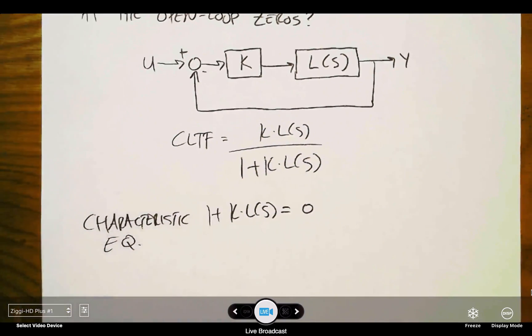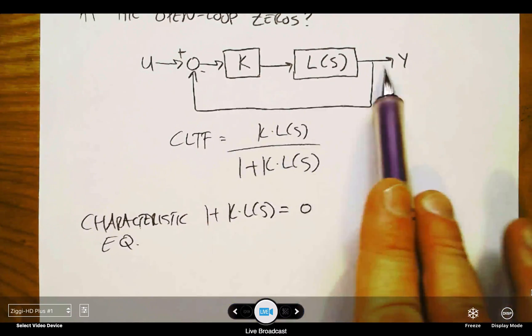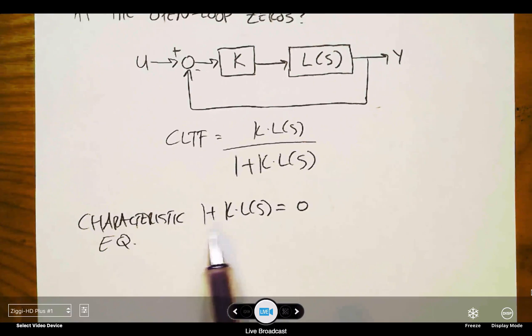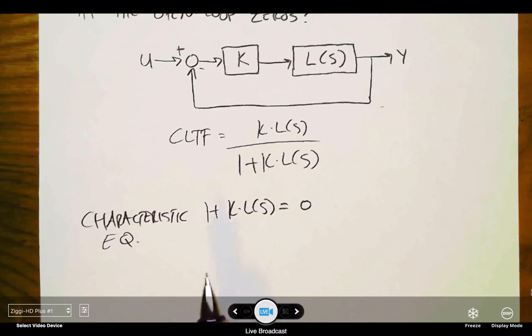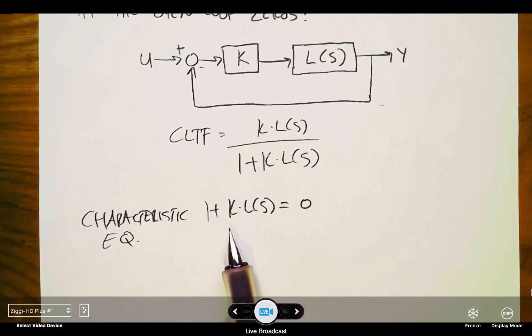So this is my characteristic equation. The roots of this are the poles. I've got this denominator 1 plus k times L(s). All I'm trying to do is graphically represent how the solutions of this characteristic equation change as k goes from zero to infinity.